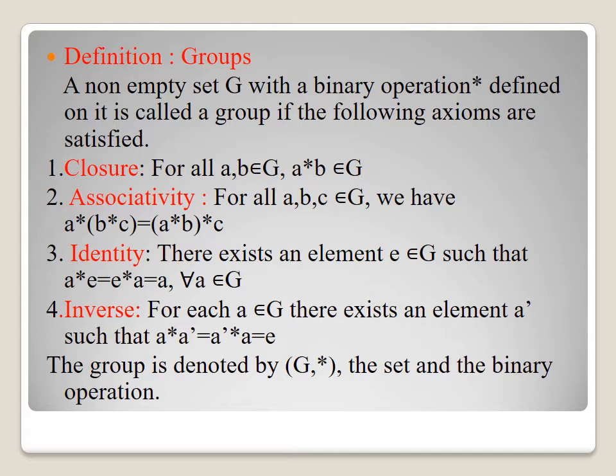Definition of groups: a non-empty set G with a binary operation star defined on it is called a group if the following axioms are satisfied. First axiom: closure — for all a, b belonging to G, a star b also belongs to G. Second: associative — for all a, b, c in G, (a star b) star c equals a star (b star c). Third: identity element — there exists e in G such that a star e equals e star a for every a in G. Fourth: inverse element — for each a in G, there exists a' such that a star a' equals a' star a equals e. The group is denoted by (G, star).